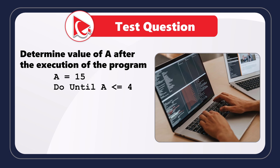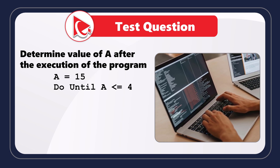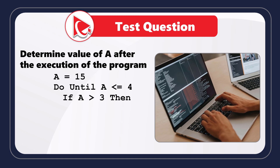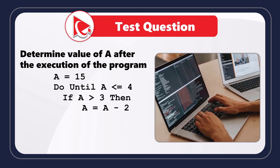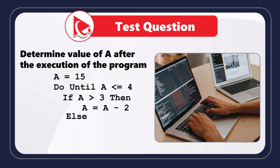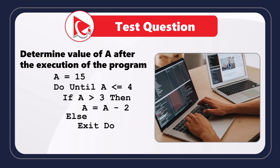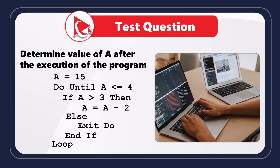Then the logic goes: do until A is less than or equal to 4, then we enter the loop. If A is greater than 3, then A equals A minus 2. Else, we exit the loop.